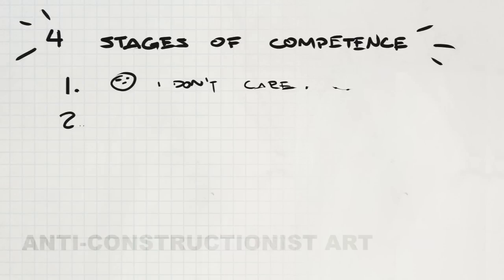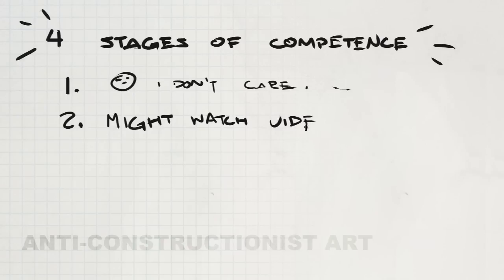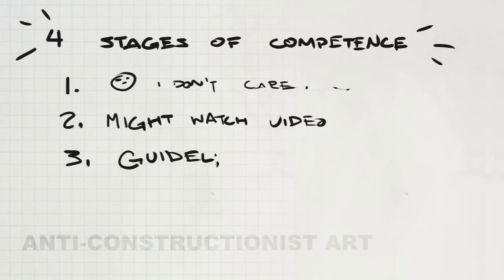Stage two is conscious incompetence, and that means you're actually aware that you're bad at something or don't know how to do it well, so it implies some interest in the topic. For these videos, that means you might be watching just as a passing interest — maybe you enjoy watching art but haven't really learned to do it yourself. Stage three is where things get more interesting: conscious competence. That means you can do something but have to be really aware of what you're doing. This is like the standard student phase — you're learning anatomy, using guidelines to construct things because without them you might not know where things belong. Guidelines are actually very helpful when you're learning; they teach you relationships of objects and anatomy and help you better grasp these concepts.